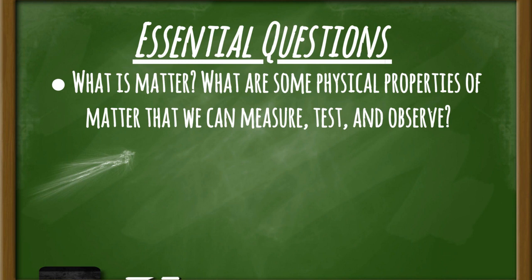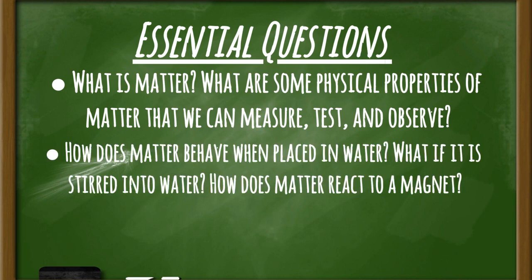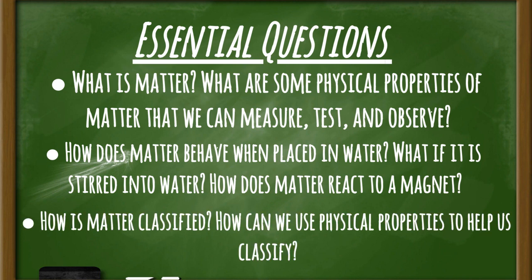We talked about those physical properties today. The second essential question is: how does matter behave when placed in water, what if it is stirred into water, and how does matter react to a magnet? These essential questions focus on a part of matter we will explore more in depth tomorrow. The last question is: how is matter classified, and how can we use physical properties to help us classify?